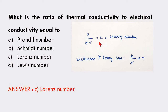According to the Wiedemann-Franz law, the ratio of thermal and electrical conductivity is directly proportional to absolute temperature. Also, materials that are good conductors of heat are also good conductors of electricity.